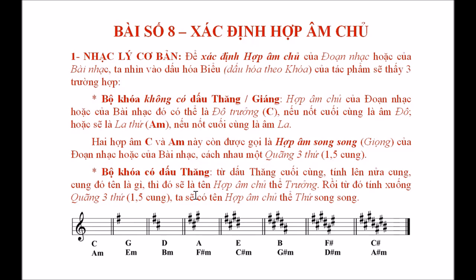Trường hợp thứ hai, khi bộ khóa có dấu thăng, thì cách tính hợp âm chủ sẽ từ dấu thăng cuối cùng tính lên nửa cung. Cung đó tên là gì thì đó sẽ là tên của hợp âm chủ ở thể trưởng. Rồi từ đó tính xuống một quãng ba thứ, chúng ta sẽ có tên của hợp âm chủ ở thể thứ song song.